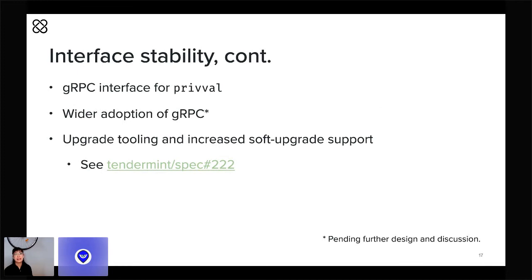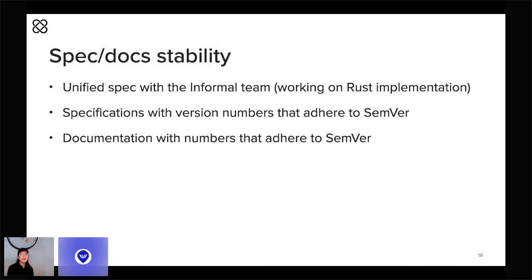There's actually an RFC open on the spec repo right now if anyone wants to take a sneak peek. Speaking of the spec, we're really investing there too, working with the team over at Informal Systems. The Informal team is working on a Rust implementation of Tendermint, and we work with them on pretty much every change to the Tendermint spec. We're ensuring that both implementations share a common and language-agnostic spec, versioned according to semantic versioning. Similarly, we want to make sure our user-facing documentation is semantically versioned as well.